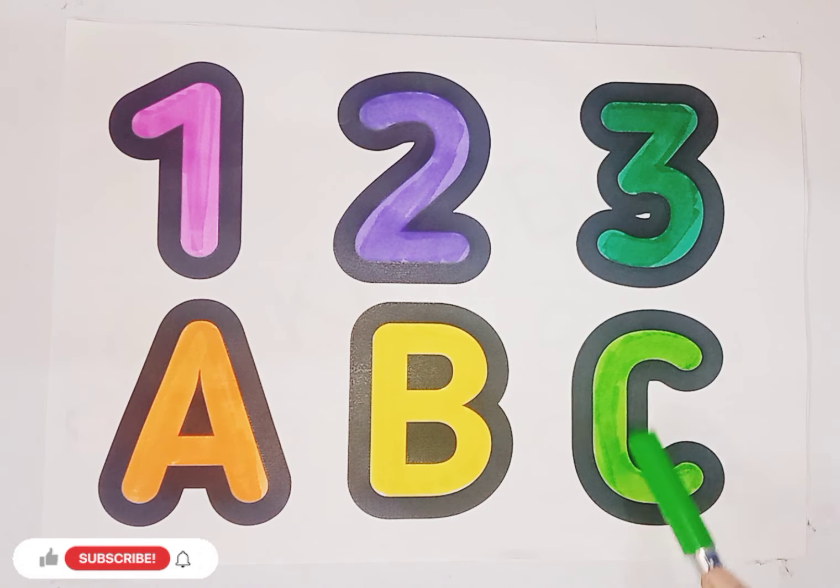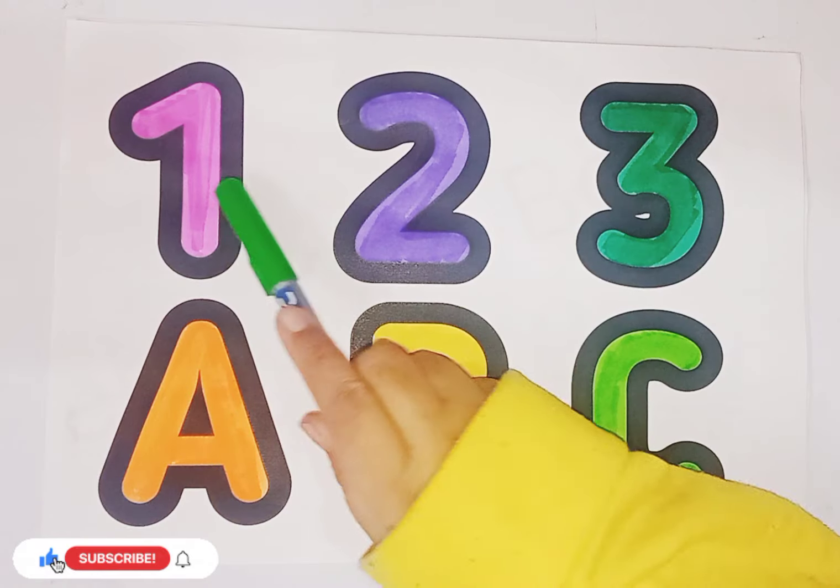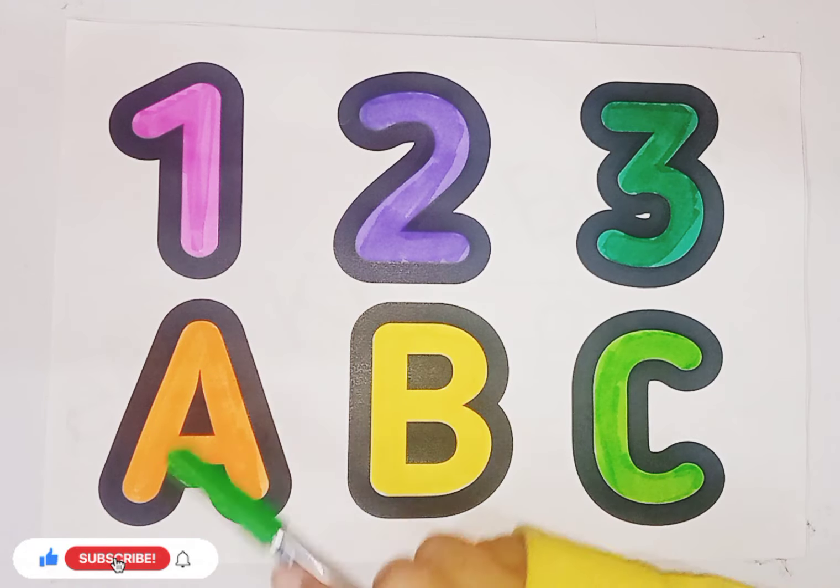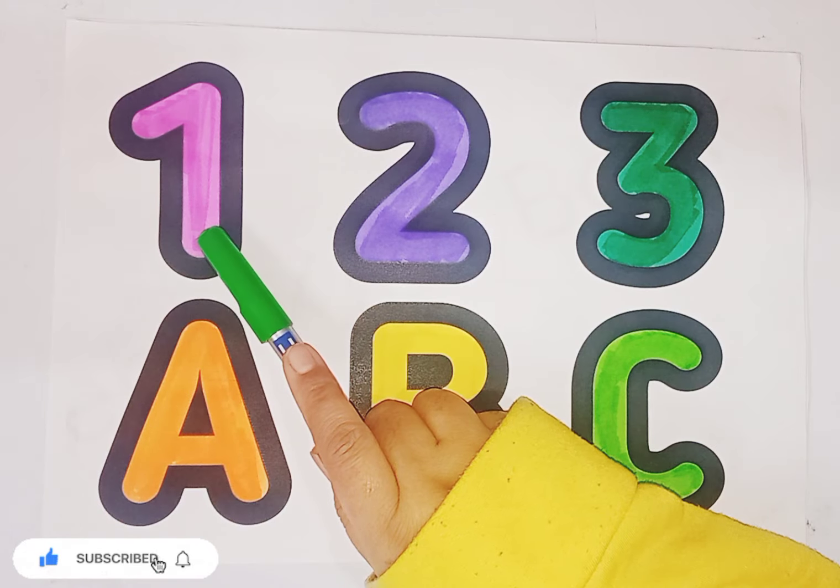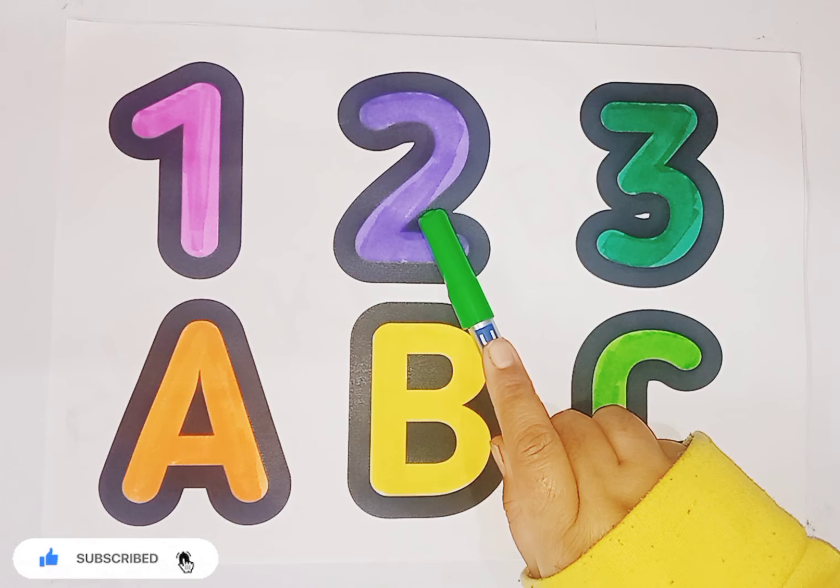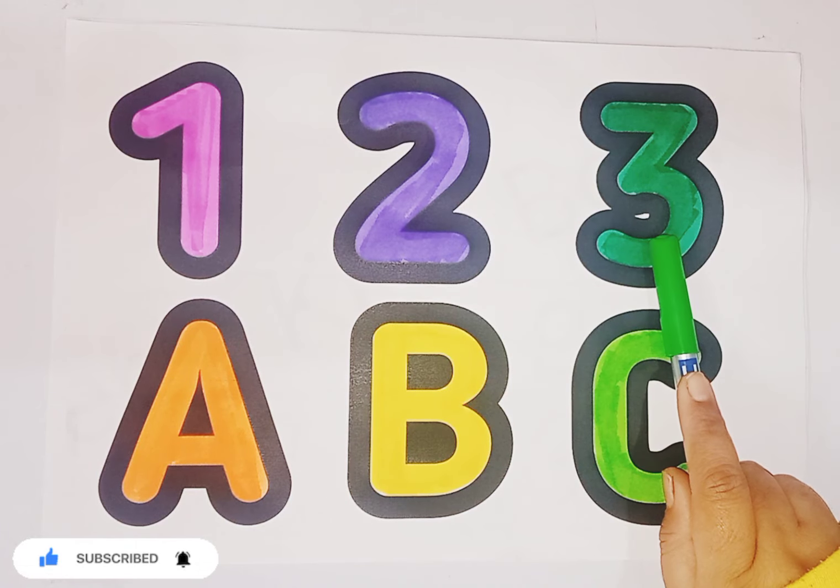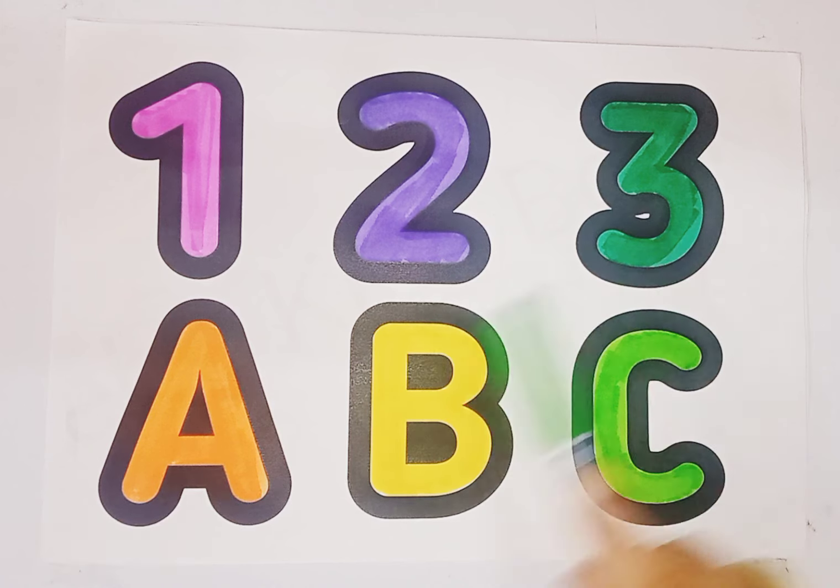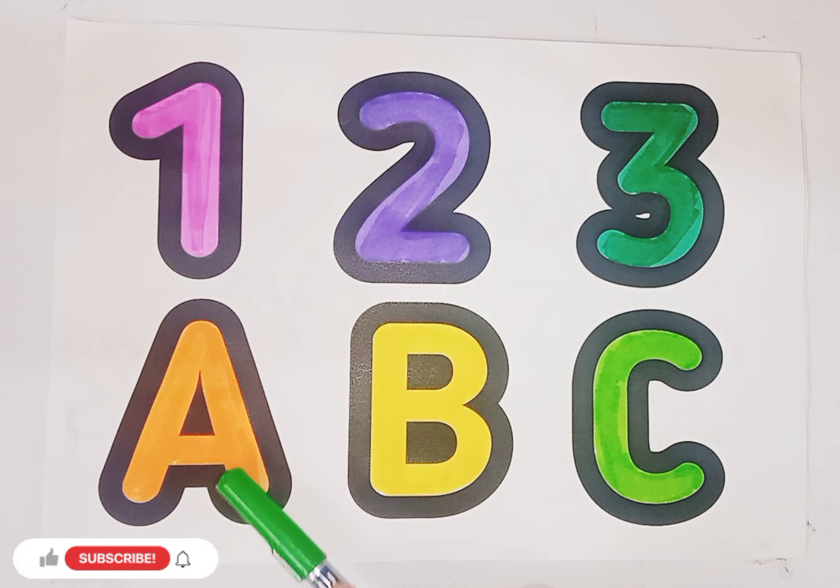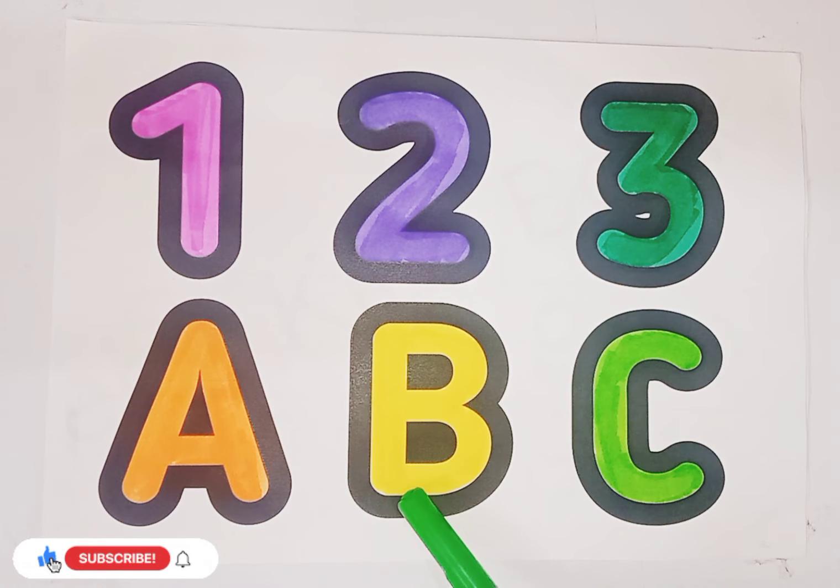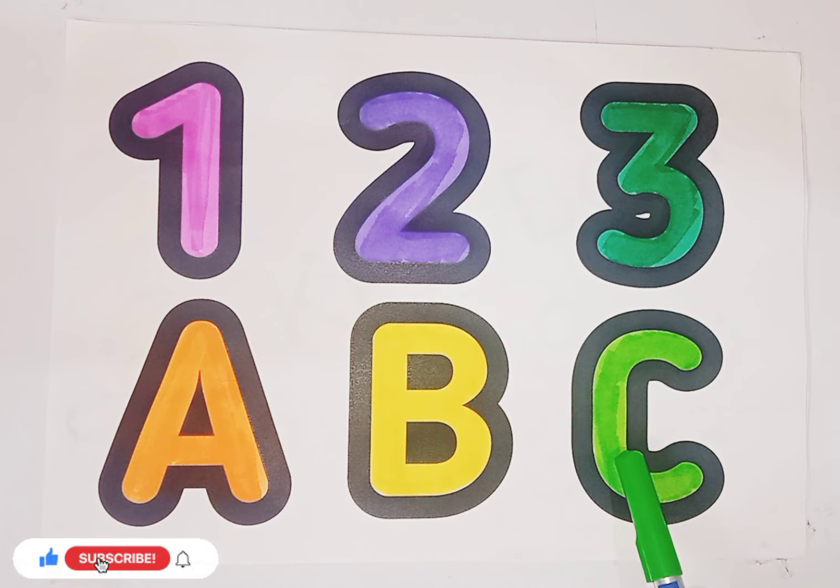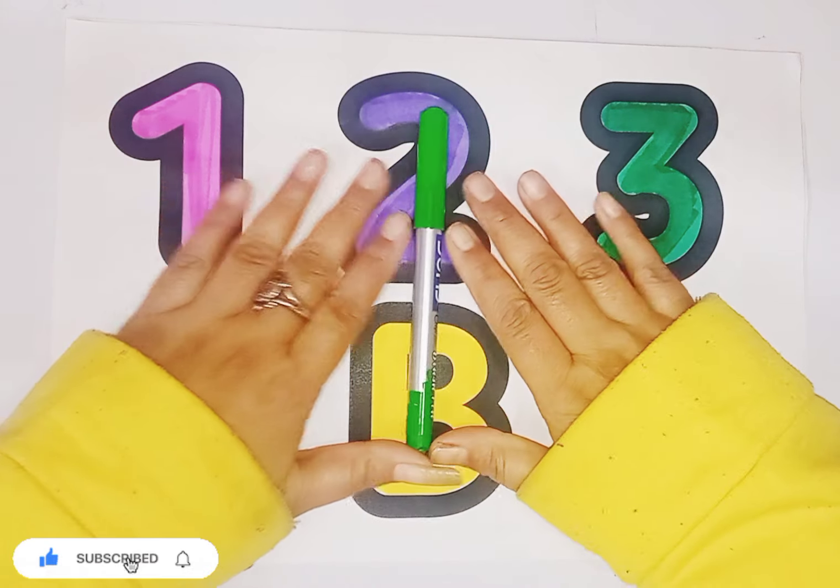So kids, today we learned numbers and alphabets. Let's revise again. 1, O-N-E. 2, T-W-O. 3, T-H-R-E-E. A, A is for ant. B, B is for ball. C, C is for cat.